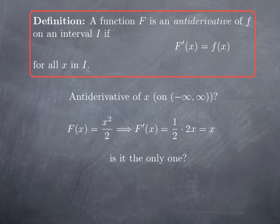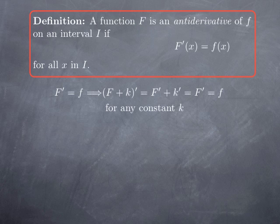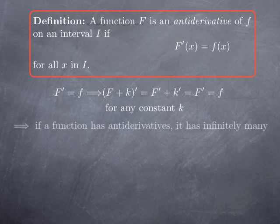The natural question is: is it the only one? Is it the only choice for an antiderivative of x? Well, something you can immediately observe is that if I add a constant — for instance, x squared over 2 plus 4 — when I differentiate that, I get the derivative of x squared over 2, which is x, and then the derivative of 4, which is 0. Of course, 4 can be replaced by any other constant, for instance x squared over 2 minus 3. So if F is an antiderivative of f on an interval, adding any constant gives another antiderivative. This means that when a function has antiderivatives, it has infinitely many — at least one for each constant.